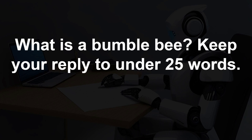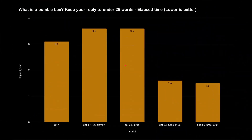My next question was: what is a bumblebee? Keep your reply to under 25 words. I wanted to see if limiting the reply would change things. The replies came back much quicker — around 3 seconds for the GPT 4 models and about 1.5 seconds for the Turbo ones — because I was specifying a length limit.